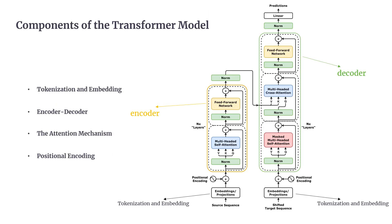Let's dive into one of the most important innovations in the world of artificial intelligence: the transformer architecture. Introduced by Vaswani et al. in 2017 in their groundbreaking paper 'Attention is All You Need,' transformers have completely transformed how we work with data, especially in natural language processing. This model has even made its way into other fields like computer vision and beyond. So what exactly is the transformer, and why is it so powerful?